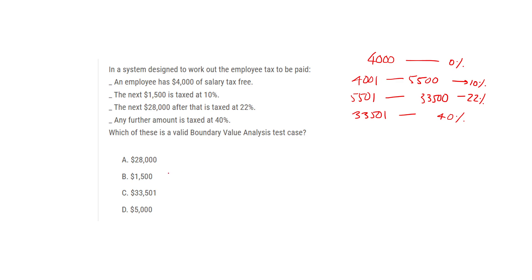33,501 — yes, we have 33,501 in the boundary, so this is the correct answer. 5,000 is nowhere in the boundaries, so that is wrong. You must draw the boundaries clearly to answer boundary value analysis questions correctly.